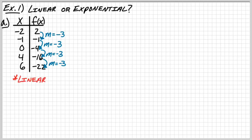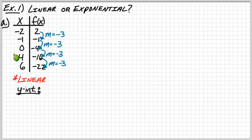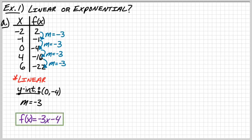The equation is actually easy if you stop and think. We already found the slope, and we don't have to plug it into point-slope form, because if you look, you already know what the y-intercept is. When x equals 0, the y-intercept is at (0, negative 4). So the slope is negative 3 and the y-intercept is negative 4, giving us f(x) equals negative 3x minus 4.